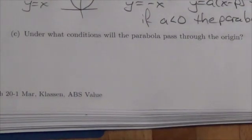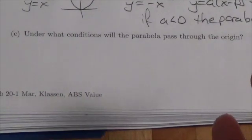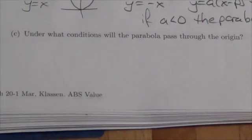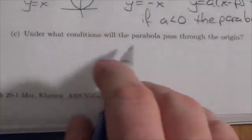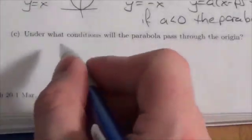I think maybe at some point people are going to want to interpret this as the vertex going through the origin, but that's actually not what it says here. It just says under what conditions will the parabola pass through the origin.